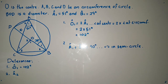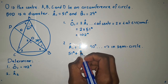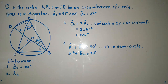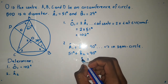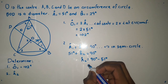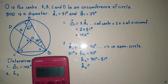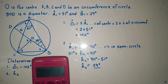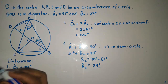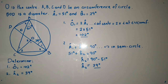We know that A1 was given as 51 degrees. So we can say 51 degrees plus angle A2 equals 90. Therefore angle A2 equals 90 minus 51 degrees. Taking our calculator: 90 minus 51, we get 39 degrees.